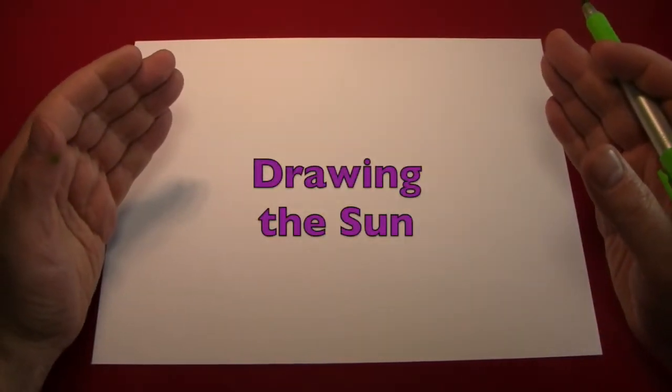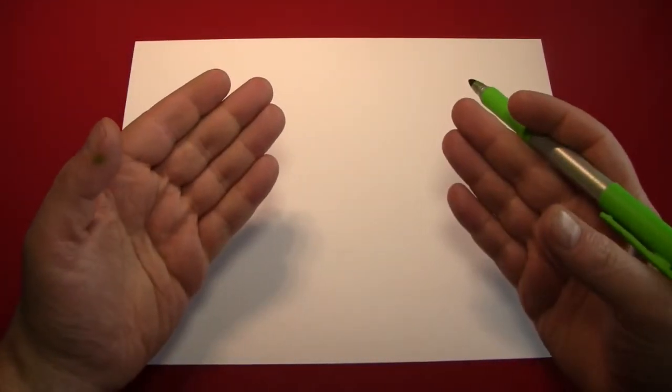In today's episode, we're going to be drawing the sun. The sun is a familiar object found mainly in the sky. It can warm the planet, and ironically, can power an air conditioner.